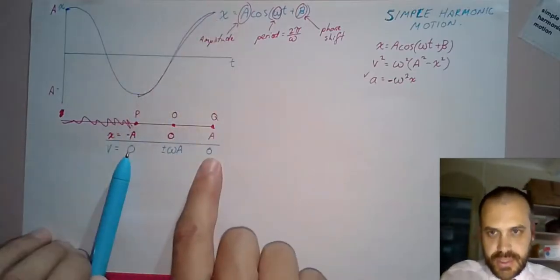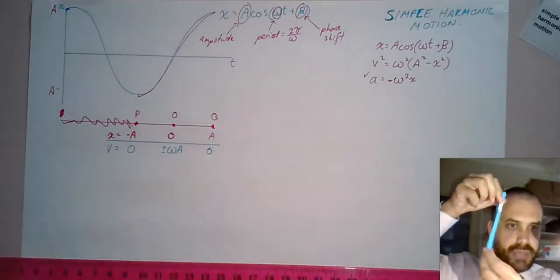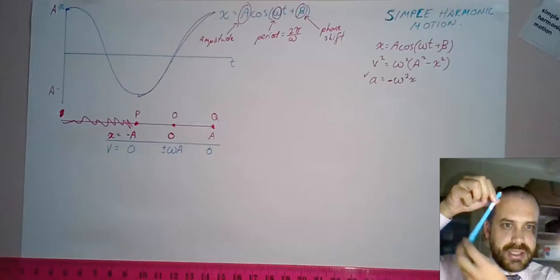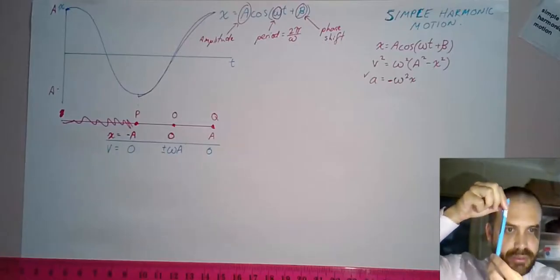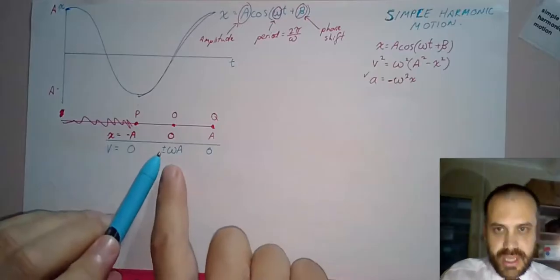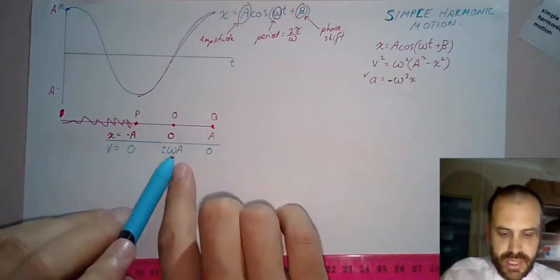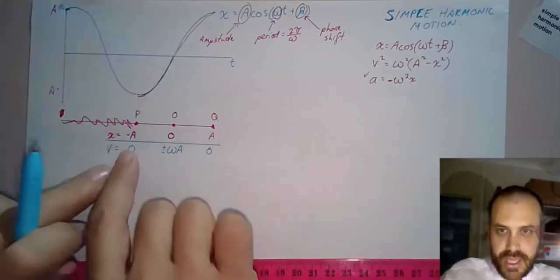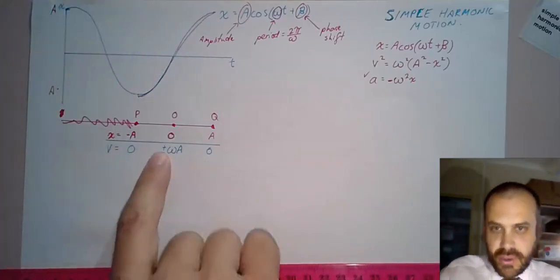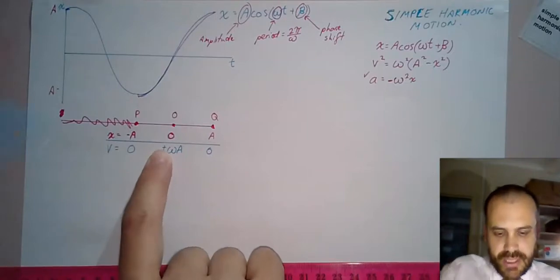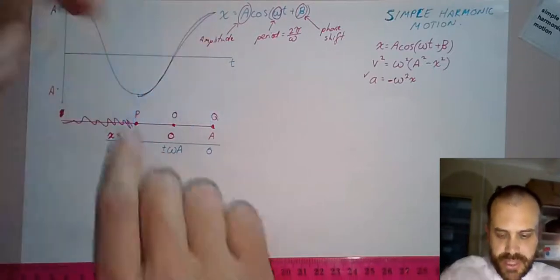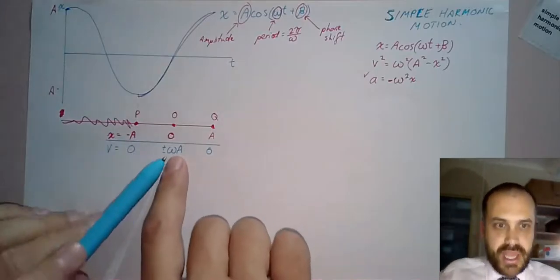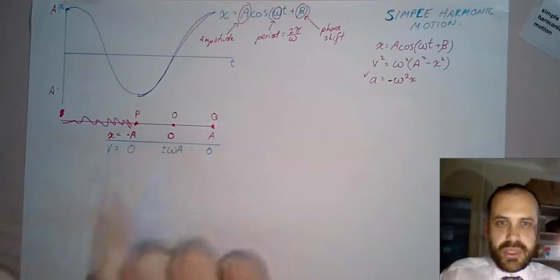What about its velocities? At the extremes, its velocity is zero. That makes sense. Think of your pendulum - it swings, it stops, and then it comes back the other way. It's at its maximum speed when it gets to the bottom of its swing, and that speed is plus or minus ωa.